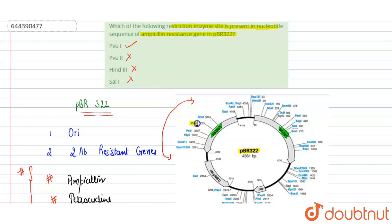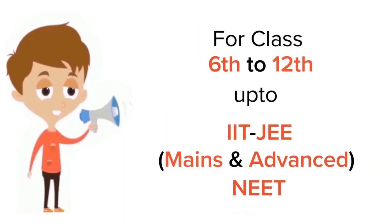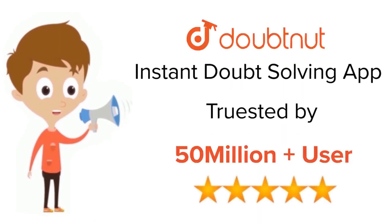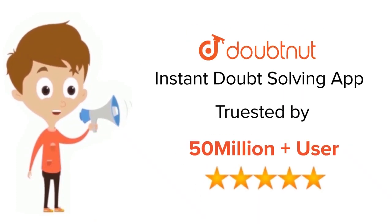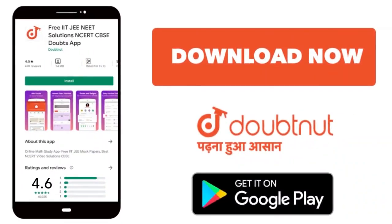The only correct option is PvuI — its restriction enzyme site is the only one present in the ampicillin resistance gene. Option A is correct. Hope you get it. Thank you. For class 6 to 12, IIT JEE, and NEET level, trusted by more than five crore students — download the DoubtNut app.